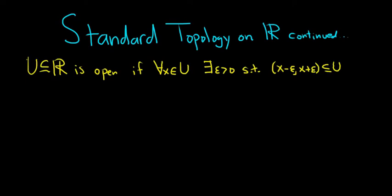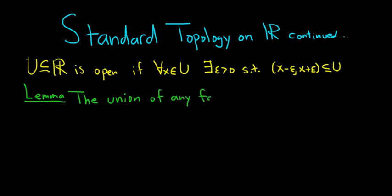In this video, we're going to prove a lemma. I'm calling it a lemma because we're going to use this to prove that the standard topology on R is, in fact, a topology. This is one of the criteria required for something to be a topology. The lemma states that the union of any family of open sets is open. We're going to prove that the union of any family of open sets satisfying this criteria is also open.